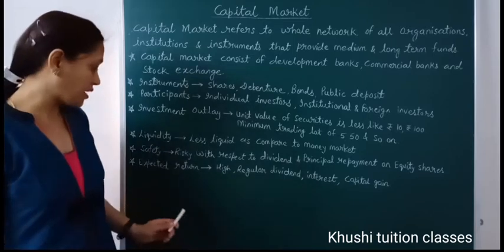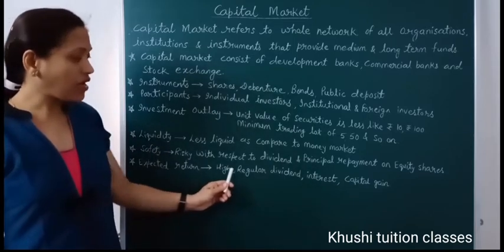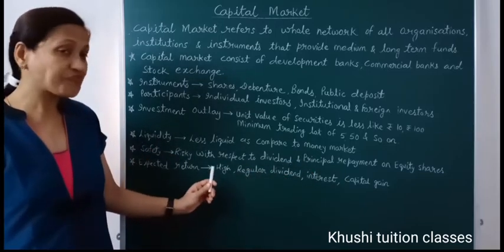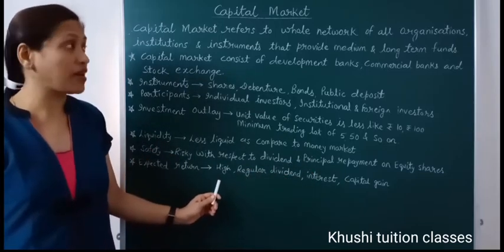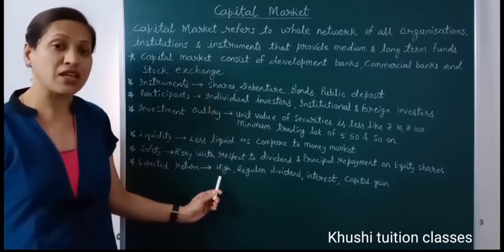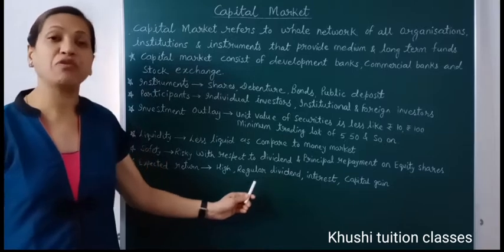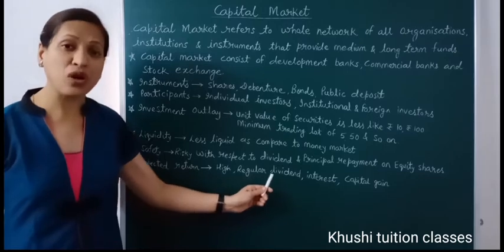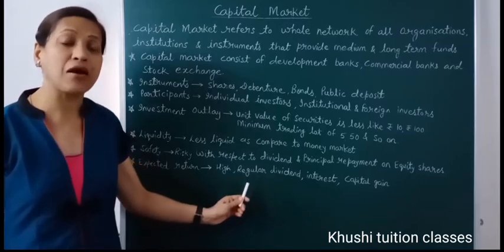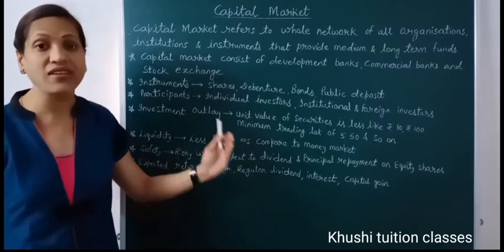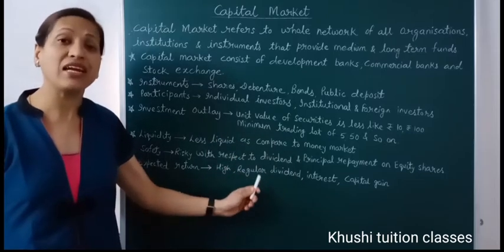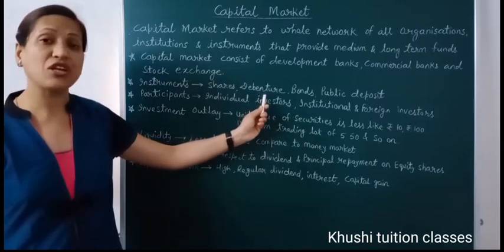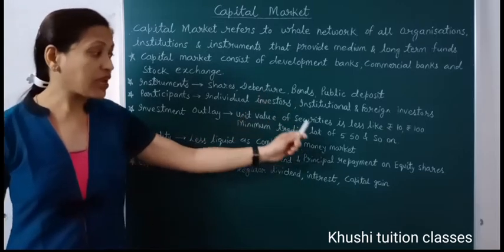Equity shareholders get their principal amount returned last, so this instrument is risky with respect to dividend and principal repayment. Expected return is high — including regular dividend, interest, and capital gain. Comparing money market and capital market, capital market returns are more. Preference shareholders get a fixed rate of dividend regularly; if the company's equity share market value increases, equity shareholders also benefit. Debenture holders get a fixed rate of interest regularly as capital gain.